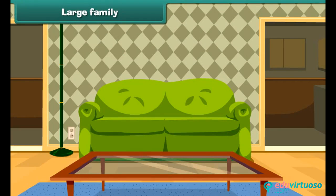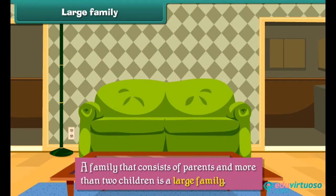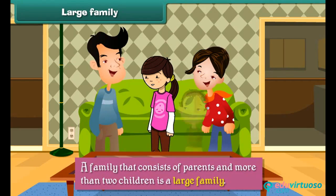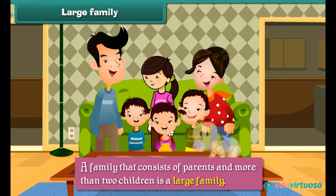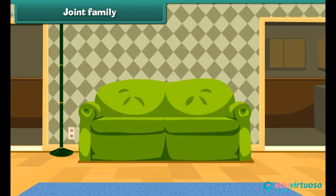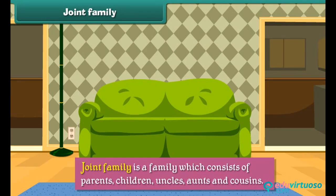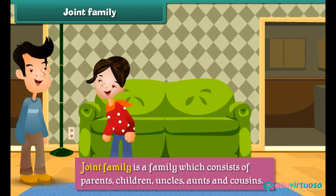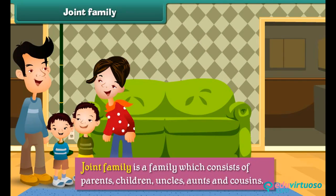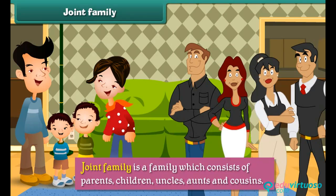Large family: A family that consists of parents and more than two children is a large family. Joint family: A joint family is a family which consists of parents, children, uncles, aunts, and cousins.